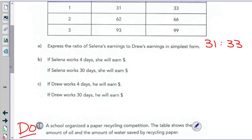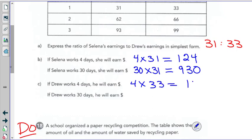If Selena works 4 days, she will earn 4 times 31, which would equal 124. If Selena works 30 days, she would work 30 times 31, because she makes $31 per day, which is $930, right? If Drew works 4 days, she will earn 4 times 33, which will equal 132. And if Drew works 30 days, 30 times 33, he will make $990.